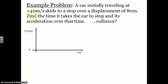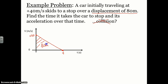A car initially traveling at positive 40 meters per second skids to a stop over a displacement of 80 meters. We want to know how much time it took the car to stop and what the acceleration was. Since it's moving forward and slowing down, the velocity goes from 40 meters per second down to a final value of 0 meters per second over some unknown time t. The area of this triangle equals 80 meters, since area equals displacement.